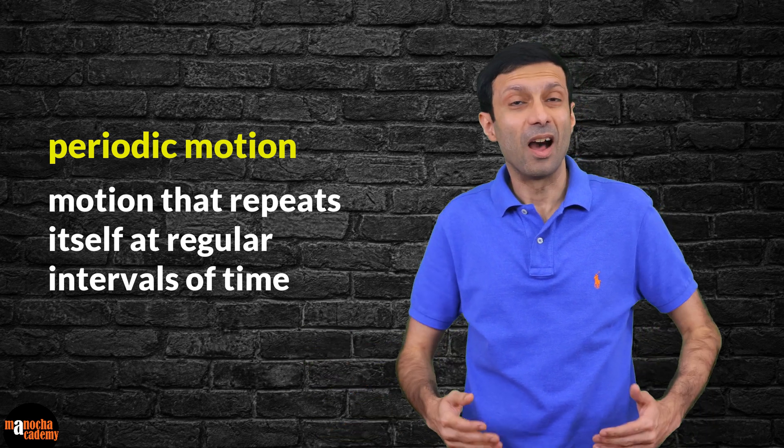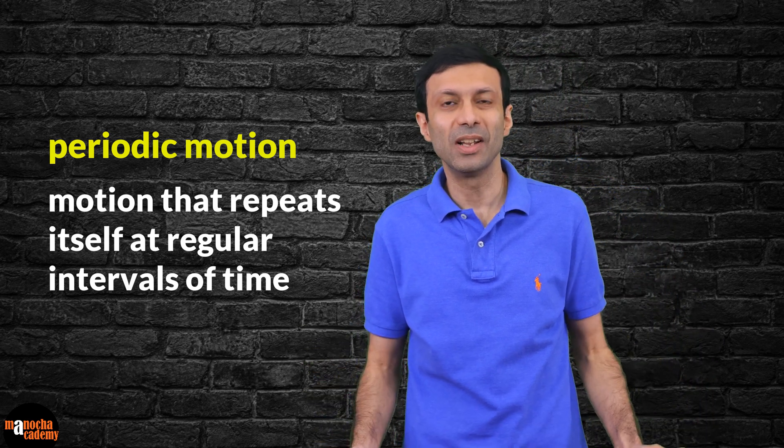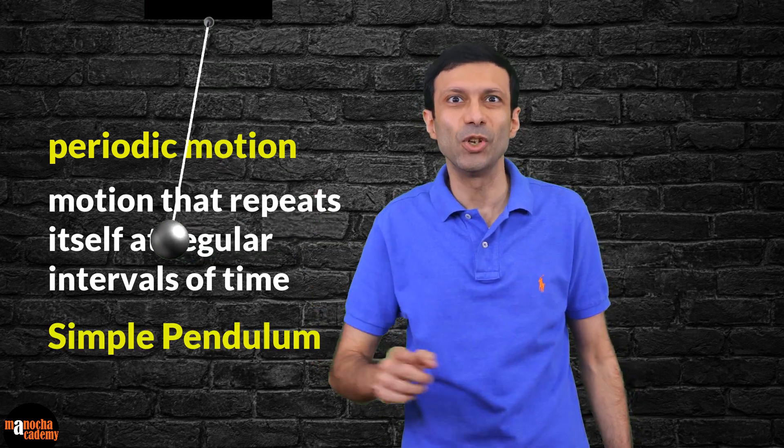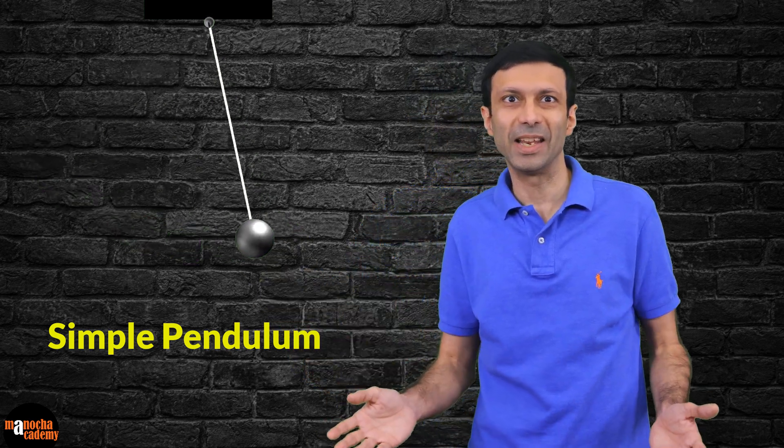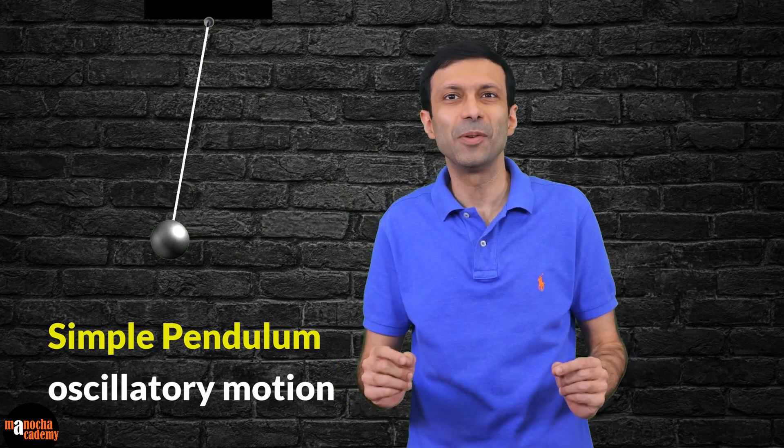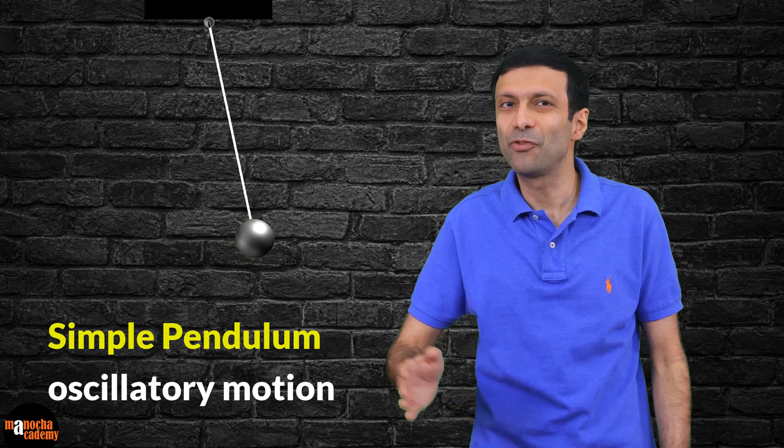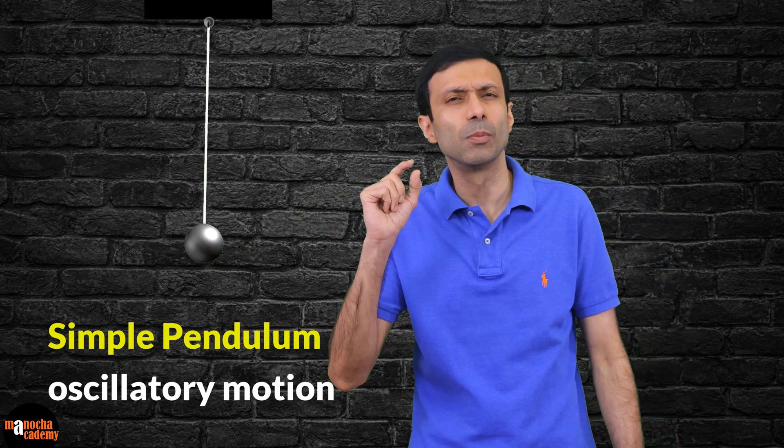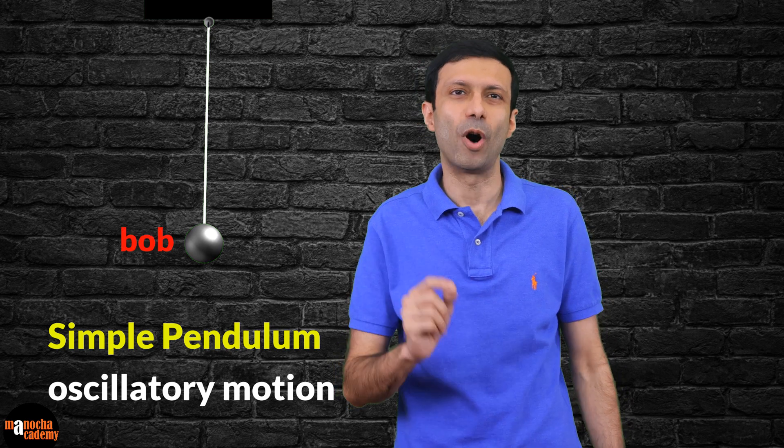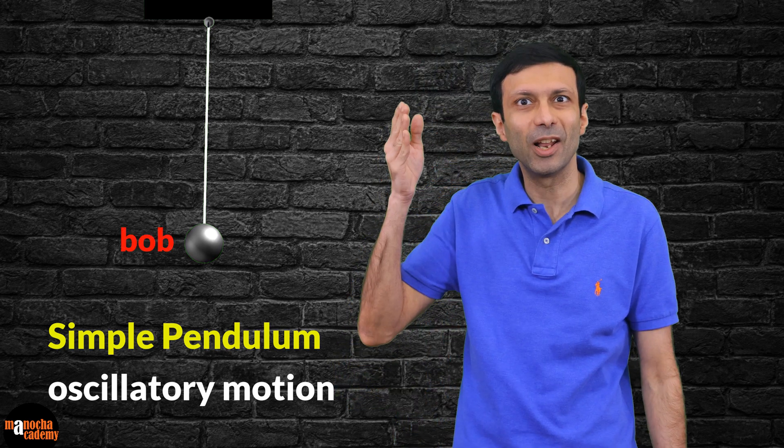Another example of periodic motion is the simple pendulum. The simple pendulum is like a swing; its motion is periodic in nature. The simple pendulum's motion is also called oscillatory motion since it moves to and fro. A simple pendulum is made from a small metal ball called a bob, and it is suspended by a long thread from a rigid support.